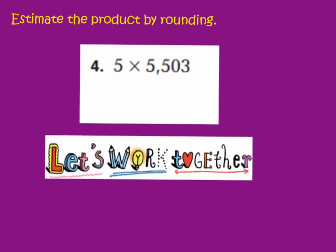So our estimate is 12,000. And we found that by rounding the greatest factor and multiplying. Now let's look at our next problem. We are skipping number 3, and we are going to jump to number 4. Number 4 says estimate the product by rounding. We have 5 times 5,503. I want you to do this one with me. We're going to work together.